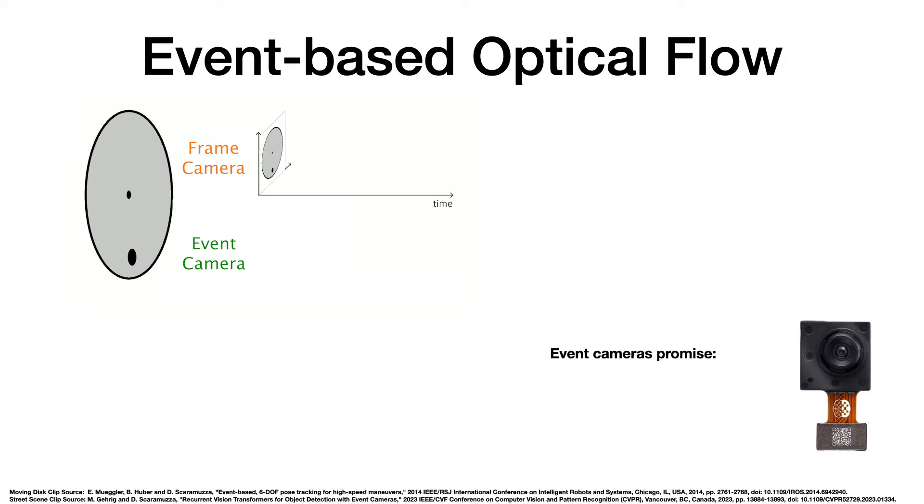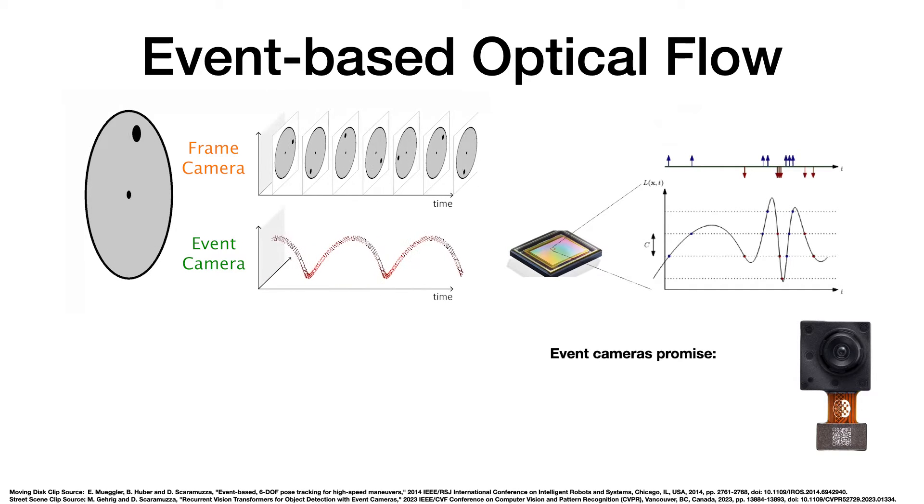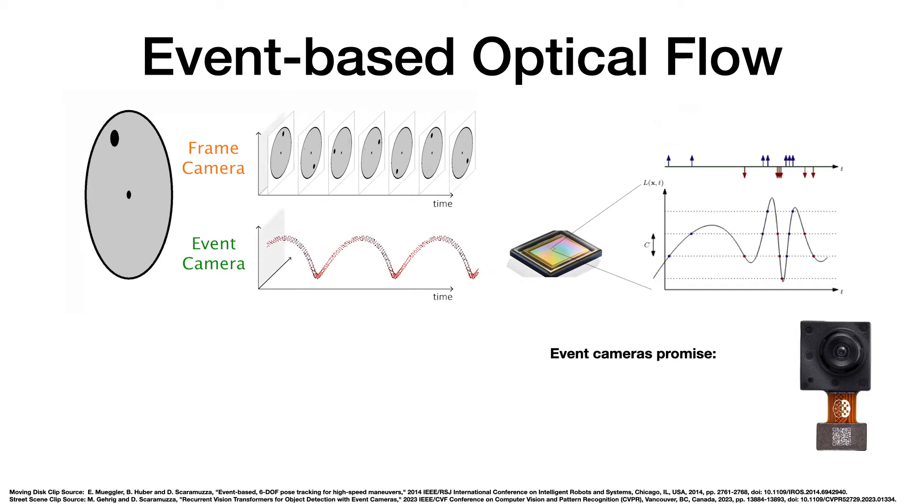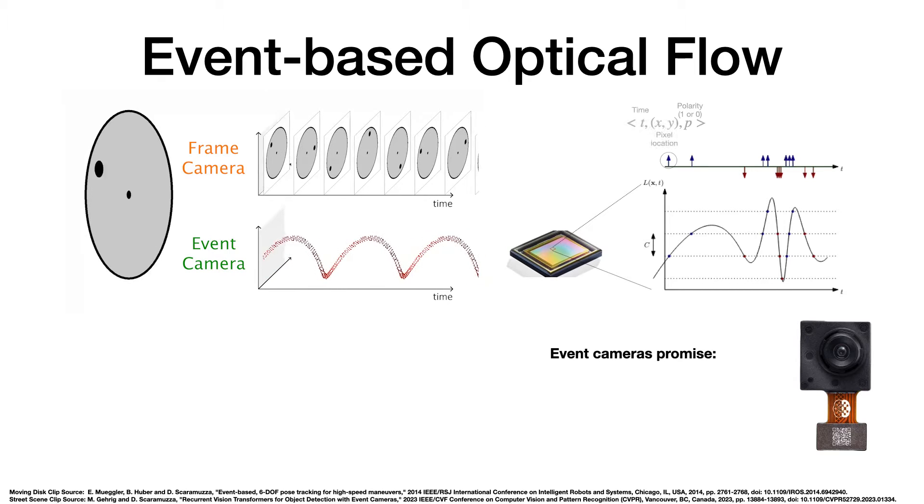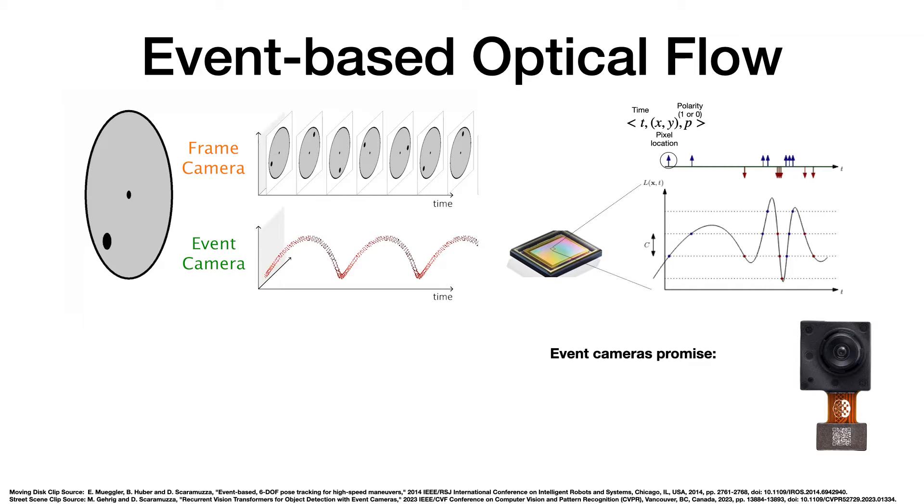While optical flow is traditionally estimated from frame-based cameras, event cameras can provide many advantages. Unlike frame-based cameras that capture light intensity at fixed frame rates, event camera pixels respond instantly to changes in brightness. When the pixel's brightness crosses a threshold, it sends an event message that includes a time of change, pixel location, and a flag indicating whether the brightness increased or decreased.